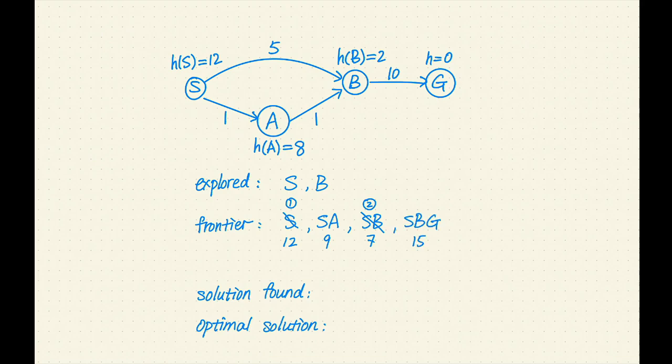Next, S-A has the smaller F value of 9. Let's remove A from the frontier and add A to the explored set. A is not a goal. Let's expand it. A has one successor, B. Let's add S-A-B to the frontier with an F value of 4.